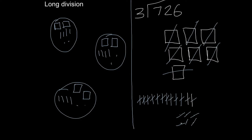So the answer to my original problem, 726 divided by 3, is in one of these groups. All I need to do is count up the base 10 blocks and that will be my answer. So I have 200 plus 40, that's four tens, and two ones, which equals 242.